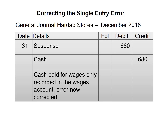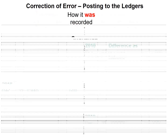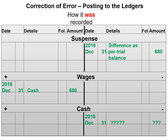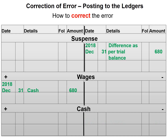Now let's have a look at how we would correct this in our ledger. How this was recorded was we debited wages with 680 and we did not have a credit entry. So we opened a suspense account of 680. To correct this error, we debit our suspense account in order to return the balance of the suspense account to zero, and then we credit our cash account. So the two entries which remain are the debit balance of wages and the credit balance of cash for 680.